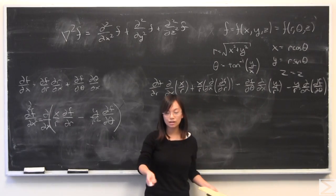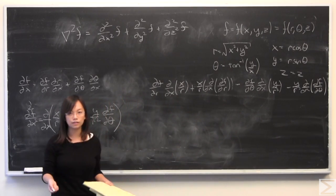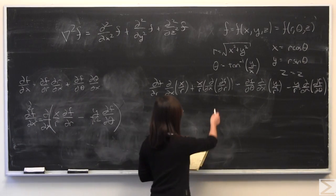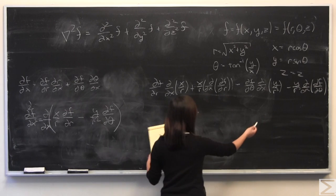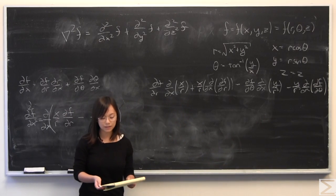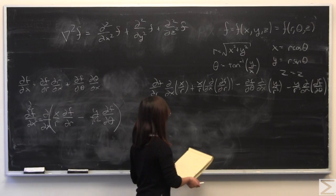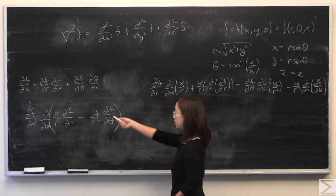We get a bunch of terms, but we also have to deal with another set of partial derivatives with respect to x of these partial of f with respect to r and partial of f with respect to theta. We're going to repeat the same process as we did before. We're going to cross out the partial of z with respect to x as before.